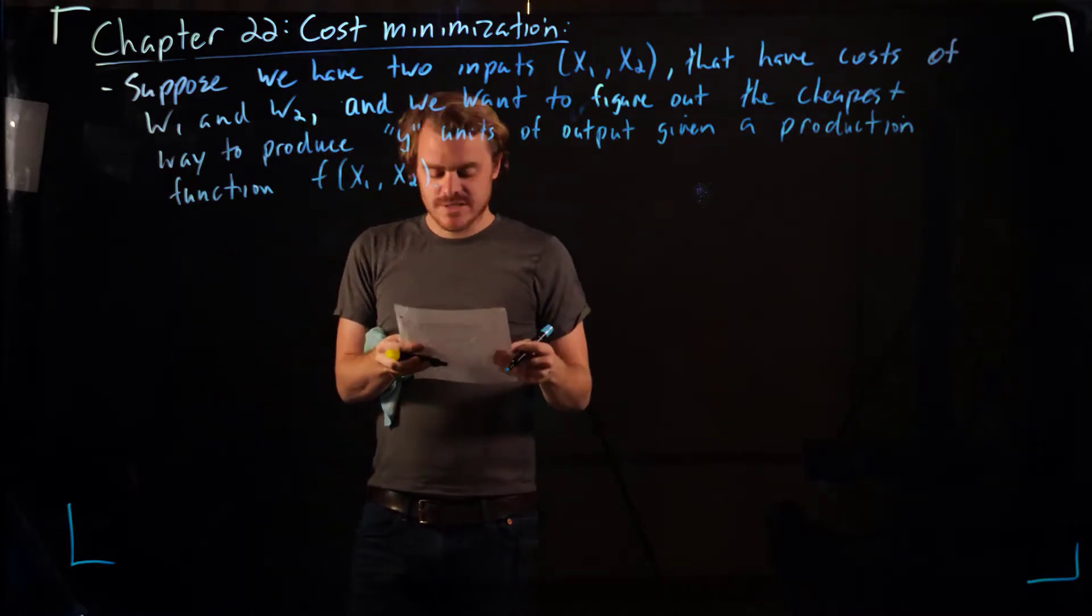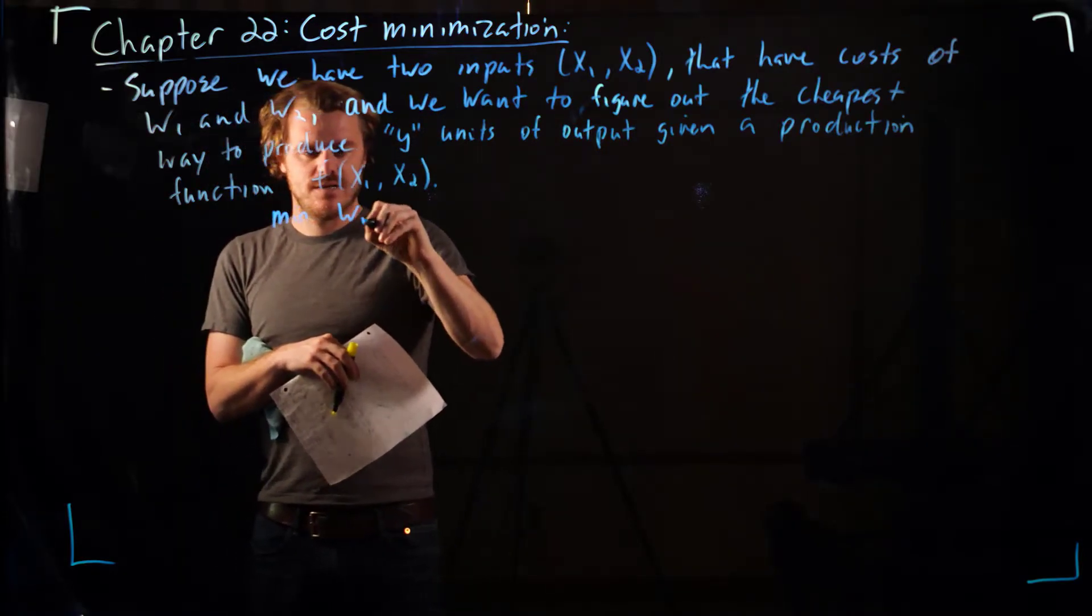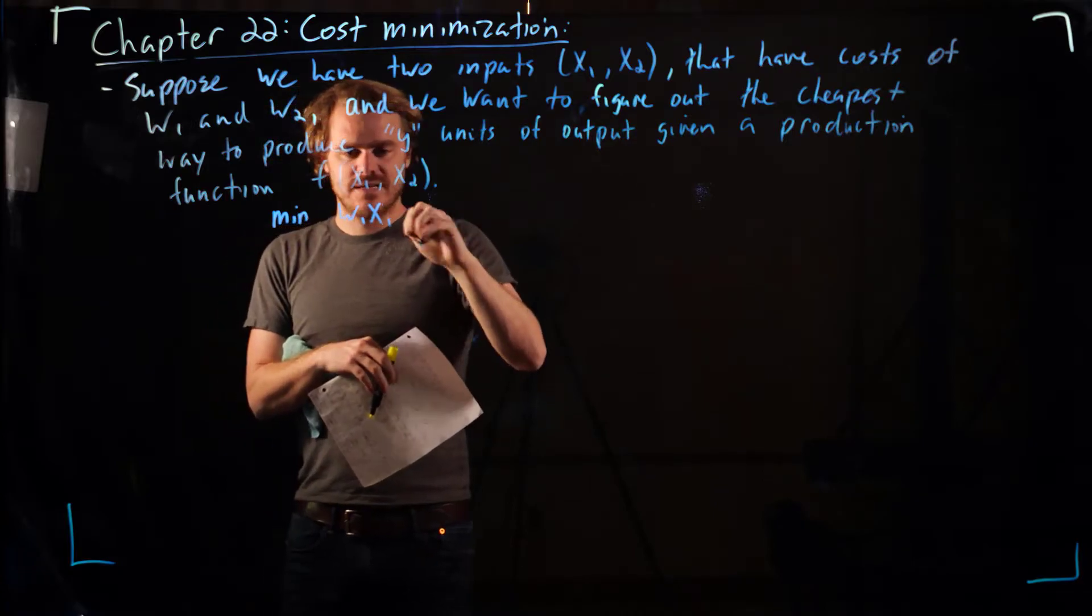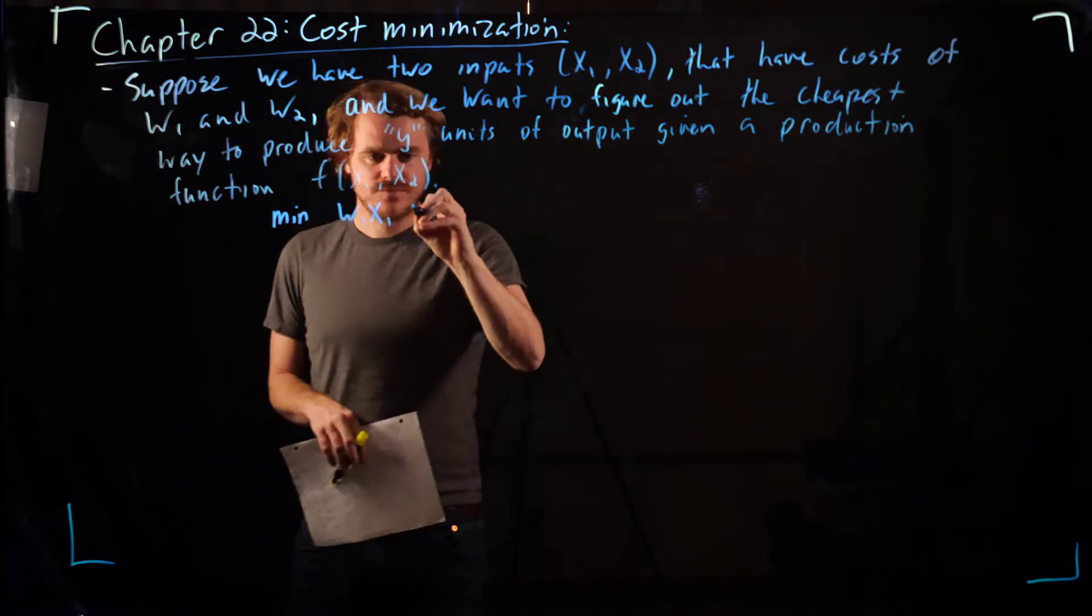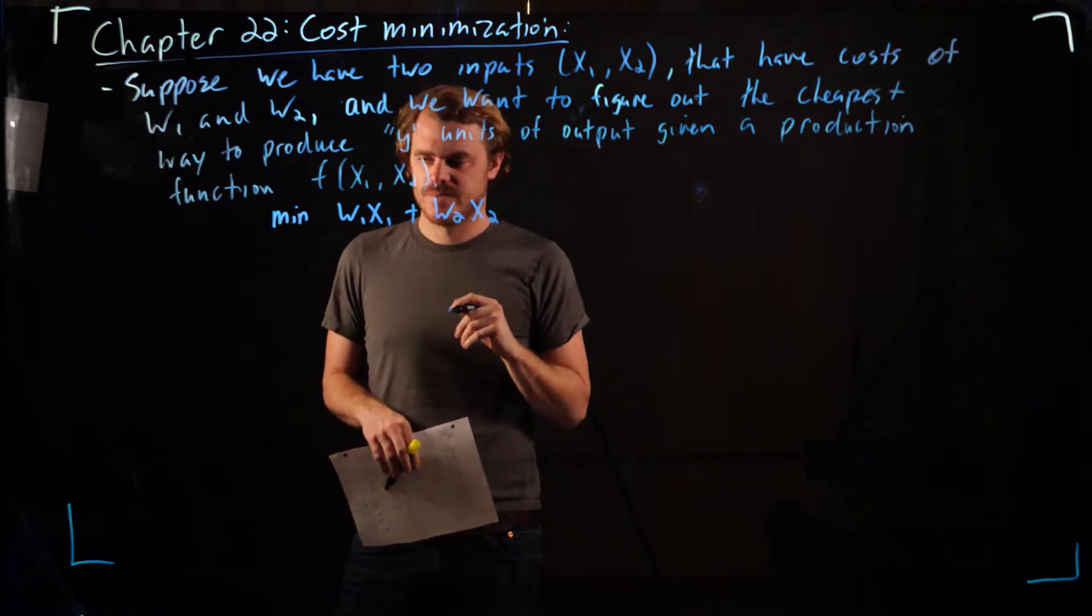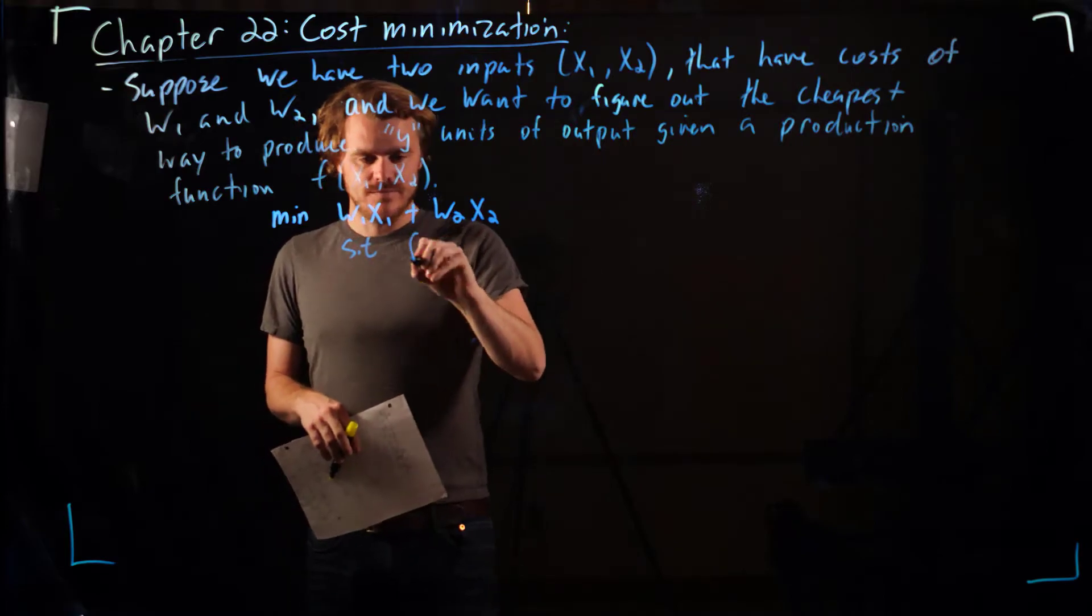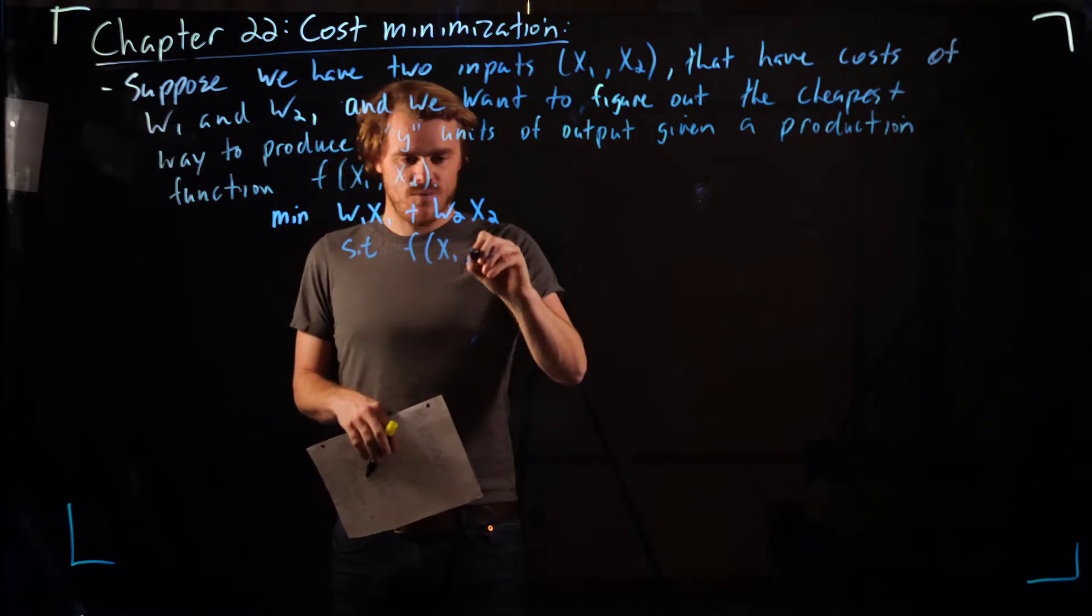What this problem looks like is that we want to minimize w1 times x1 plus w2 times x2, subject to